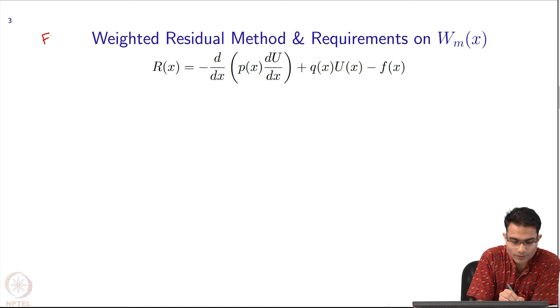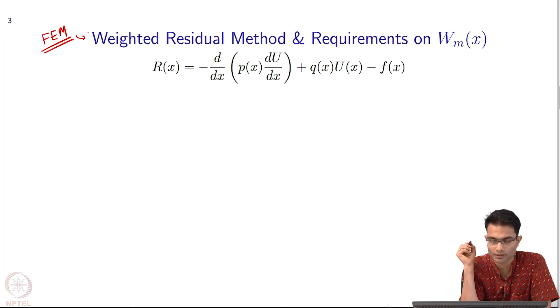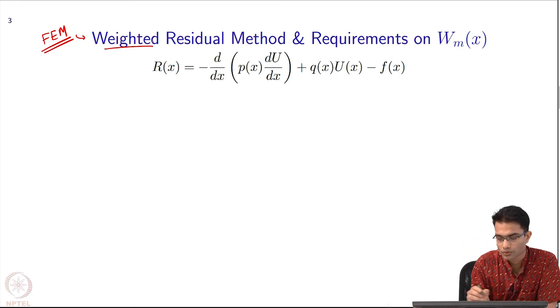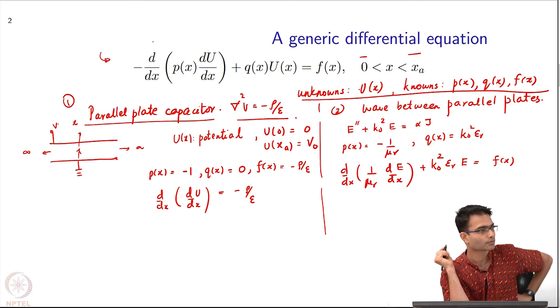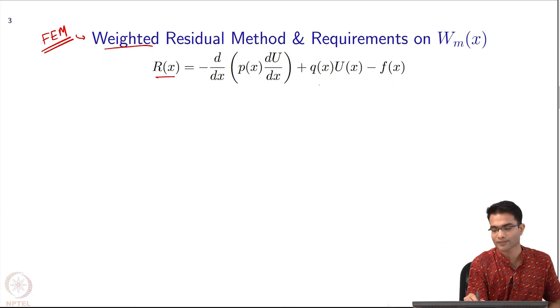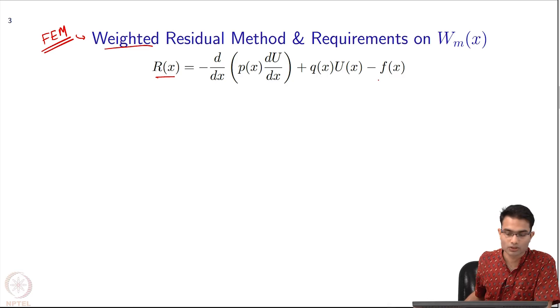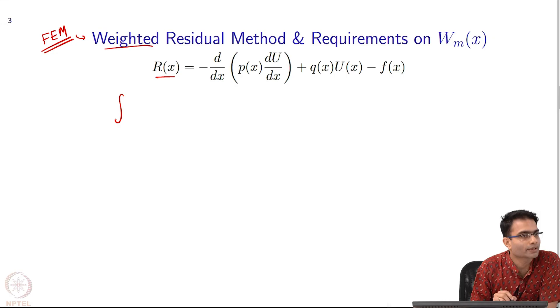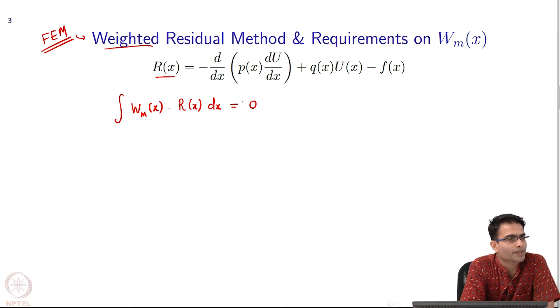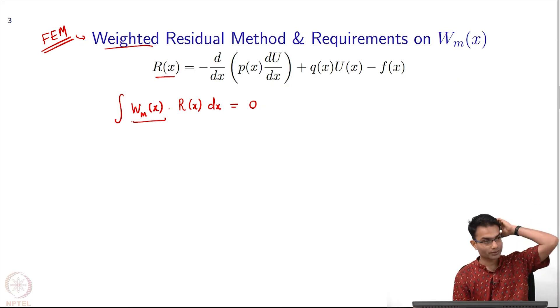Now let us put it into the FEM framework. FEM, another word we had said was weighted residual method. First of all for weighted residual I must define the residual. This was my differential equation. The residual is what? Left hand side minus right hand side is called residual. This residual r of x is defined as left hand side minus right hand side. Then what do I want to do? Weighted residual method. I have to take the integral of some weighting function I will call it W_m multiplied by r of x, integrate over dx and set it equal to 0.